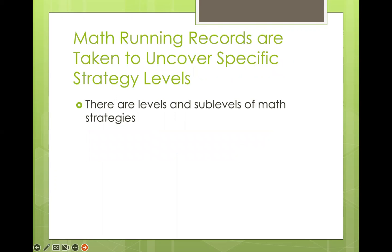Math running records uncover specific strategy levels. Level zero is where kids have no strategy. Level one is where they're doing a lot of counting. Level two is where they're doing it in their head. Level three is where kids have really started looking at numbers and depending on strategy — using what they know to help with what they don't know. For example, a kid says 'I don't know 5 times 7, but I know 5 times 5 is 25, so I'll add five more and five more' — that's derived facts, level three.